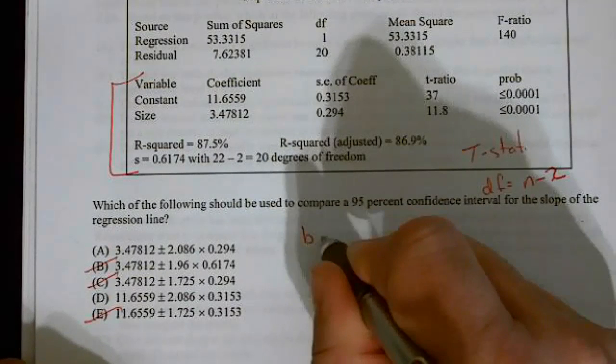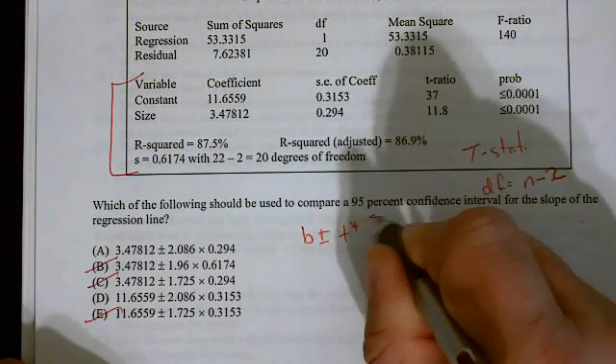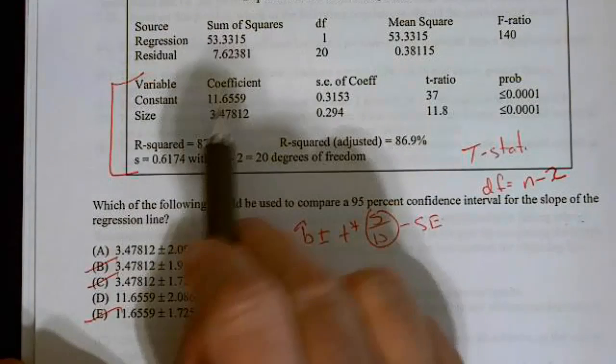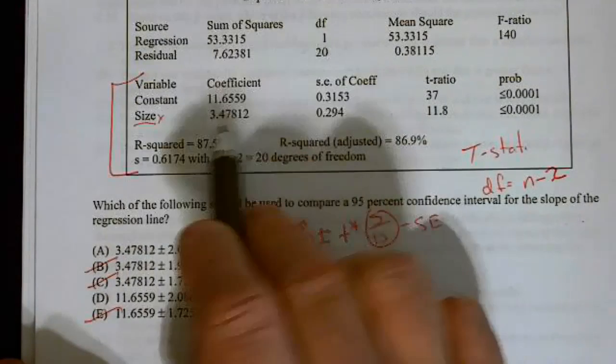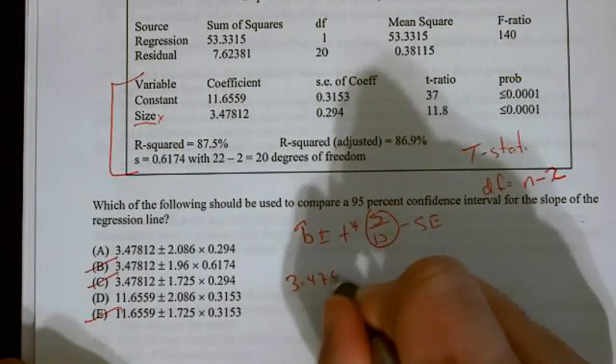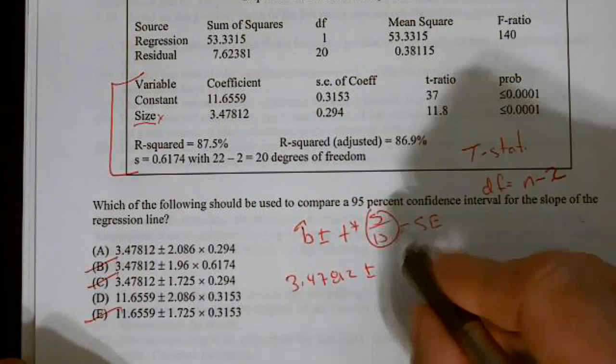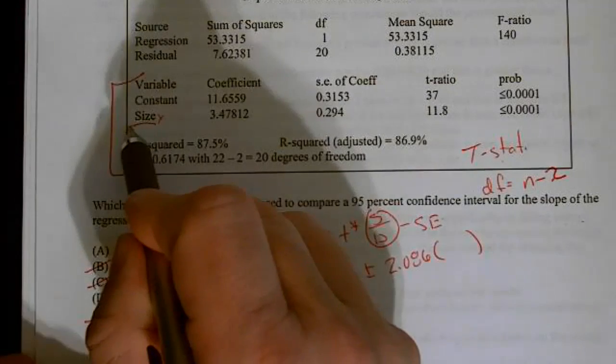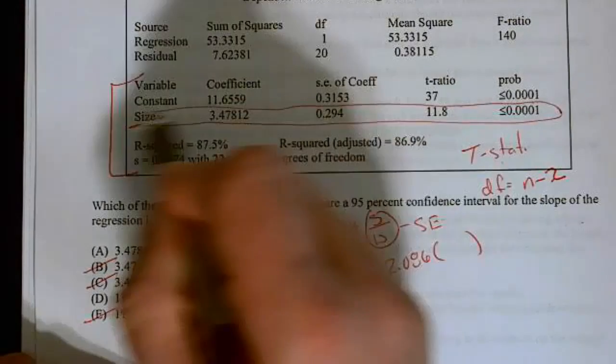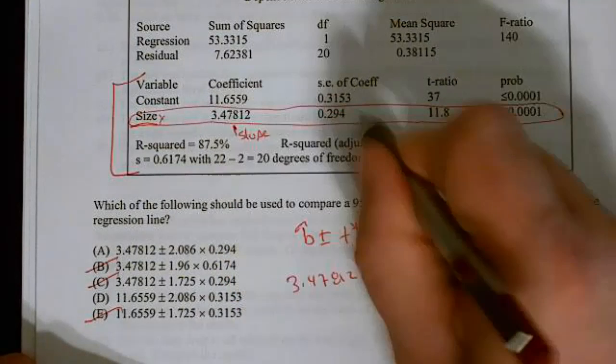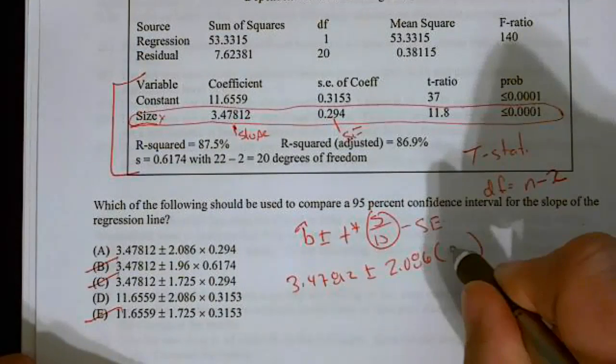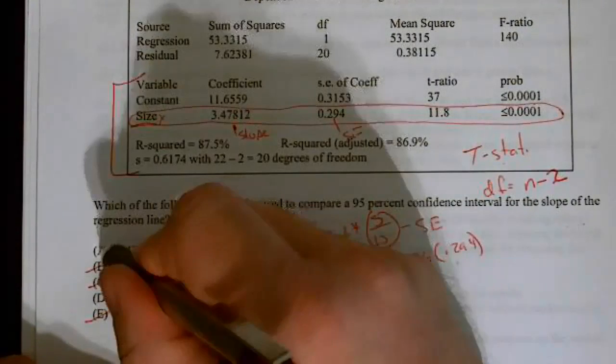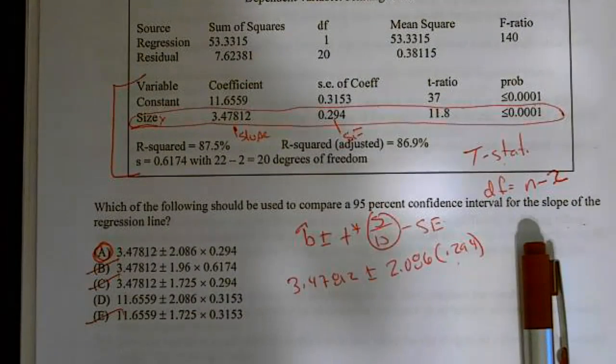And I end up getting 2.0859 or 2.086. Well, that gets rid of B, C, and E. Because remember, we're going to end up with B plus or minus T star times S over B. Now, remember, that's standard error. This is B hat. So, our slope will always be below the constant. So, this is our X value. There's our slope. So, 3.47812 plus or minus our T star value of 2.086 times the standard error. The nice thing is, they actually calculated the standard error for us. Now, we're only looking at the slope line. That's the only thing we're looking for. There's my slope. And here's my standard error of the slope. So, times 0.294. 3.4782 plus 2.086 times 0.294. The answer to this one is A. I hope that helped. And we will see you on the next one.